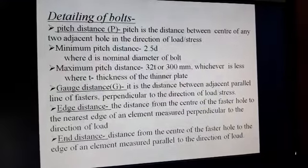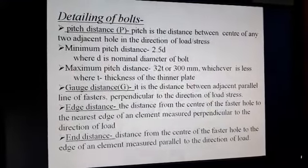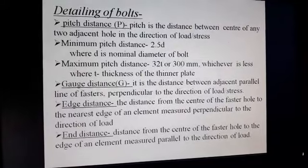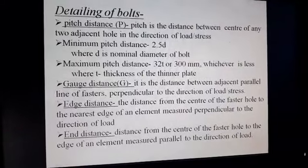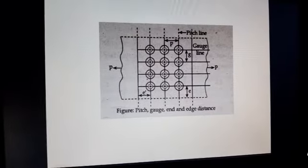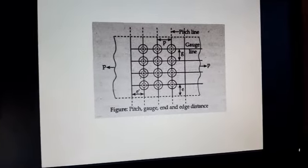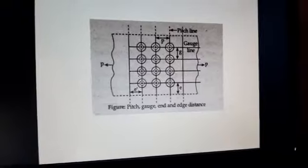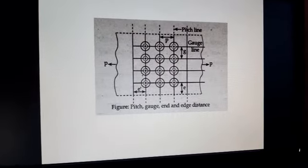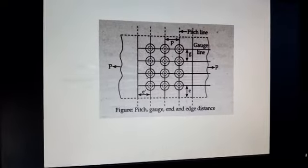The next term is gauge distance. It is the distance between adjacent parallel lines of fasteners, perpendicular to the direction of load. Gauge distance means adjacent parallel line to the fastener and perpendicular to the direction of load.